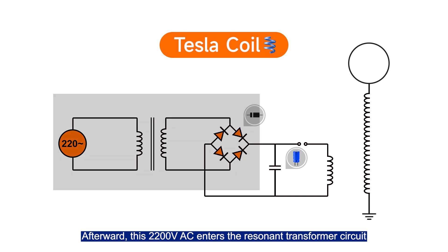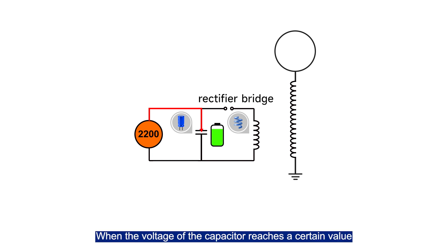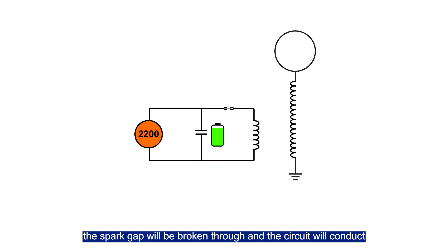Afterwards, this 2200V AC enters the resonant transformer circuit. Due to the presence of the spark gap, the second half of the circuit is not conductive, so the capacitor will be charged first. When the voltage of the capacitor reaches a threshold value, the spark gap will be broken through and the circuit will conduct.